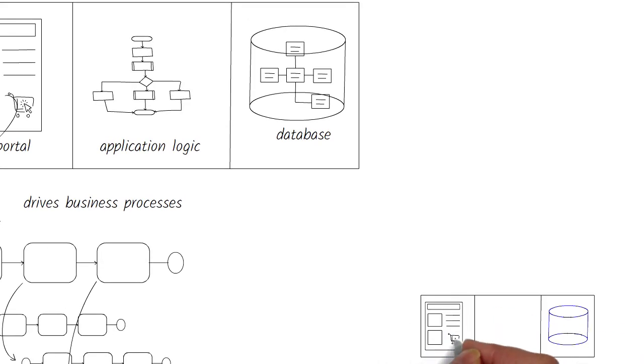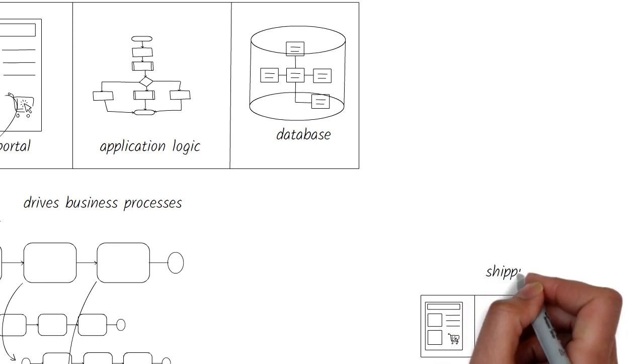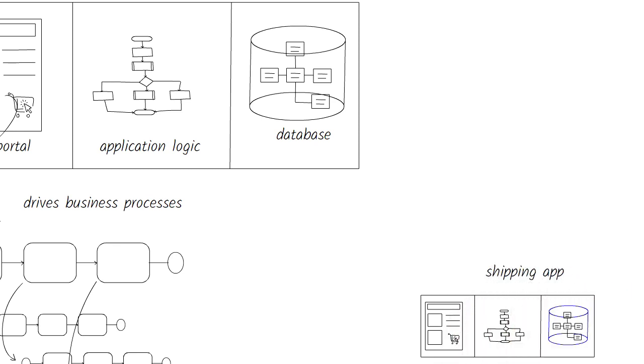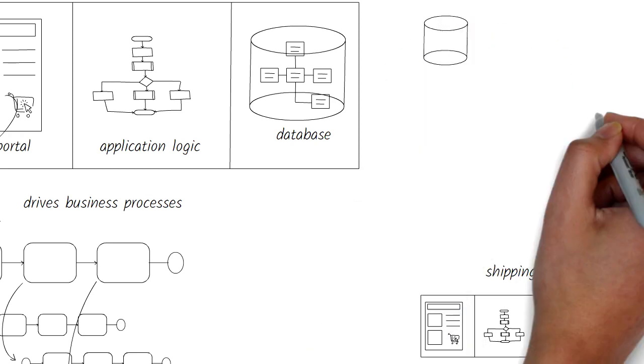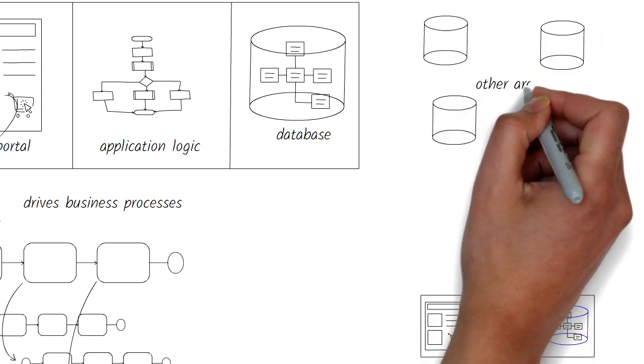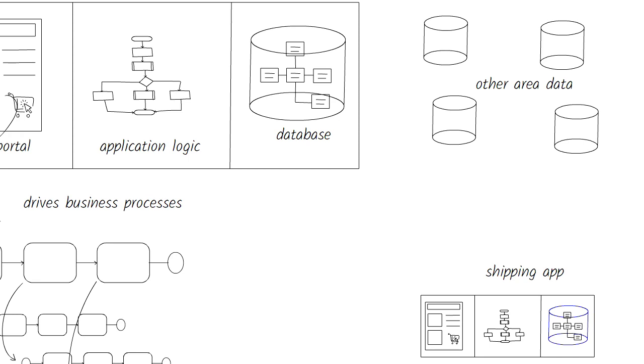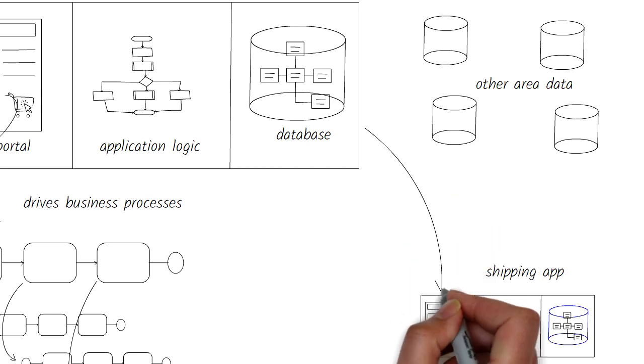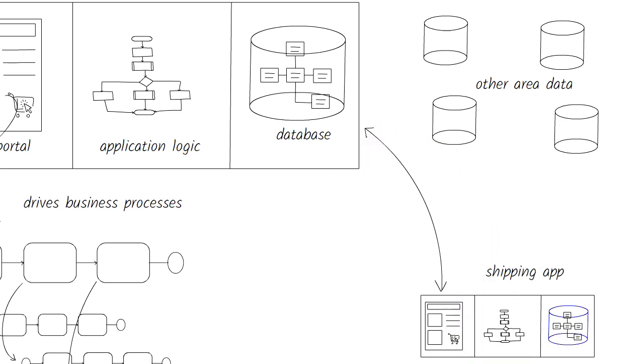The shipping department might have its own three-tier application architecture to manage the product that has to be shipped. Their database may be completely separate because that application was developed for their need, perhaps at a different point in time with a different set of technologies. Other business areas might have the same problem, essentially holding duplicate information across their databases with different business logic for the same problem.